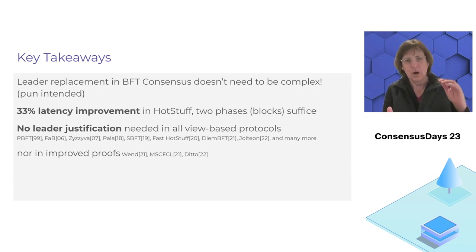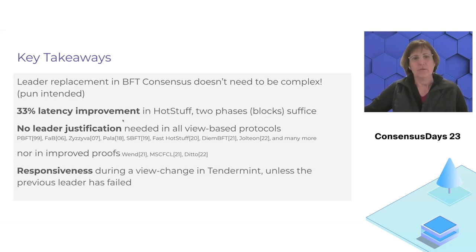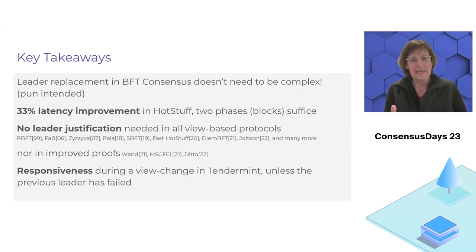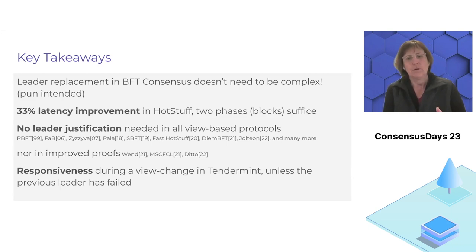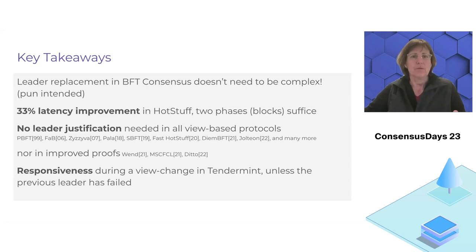There's a long line of protocols that tried to optimize the complexity of this leader justification, and none of this is actually needed. The third manifestation is that in protocols that added a maximal delay — waiting for the maximal network delay in order to manage a simpler view change regime, notably in Tendermint and some following protocols — you actually don't need to incur this extra delay. You can be responsive in all scenarios except when the immediately previous leader has failed. These are the three high-level takeaways, and in the next 10 minutes I will explain them.